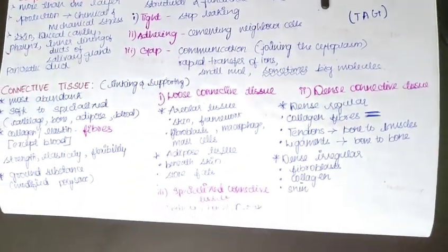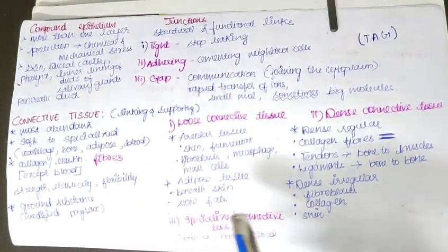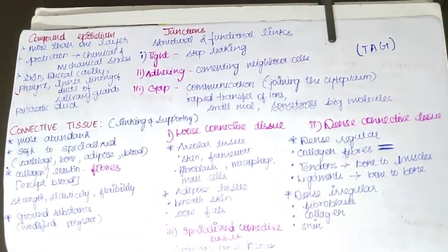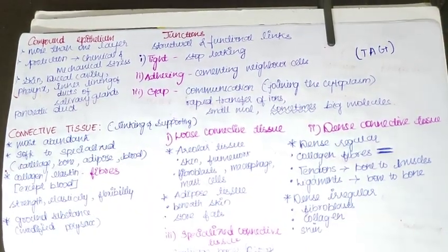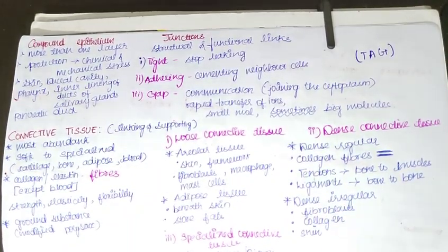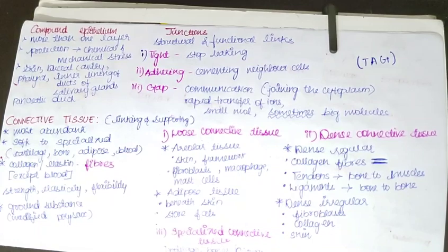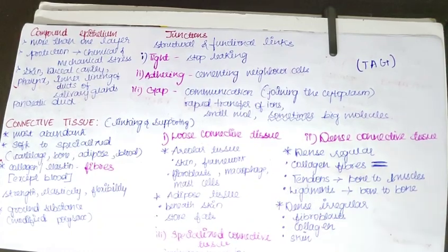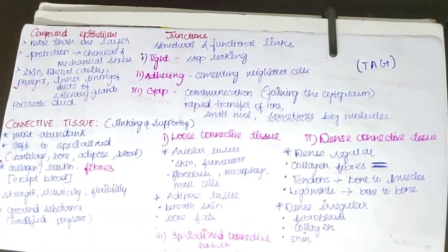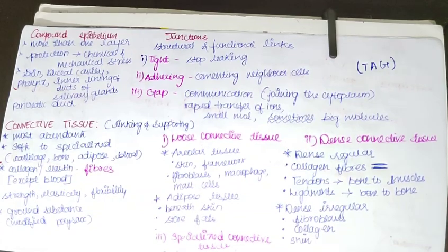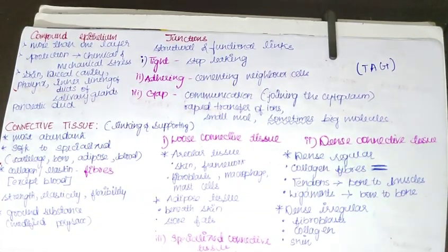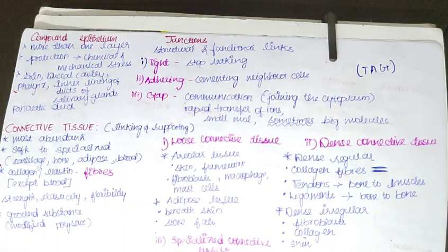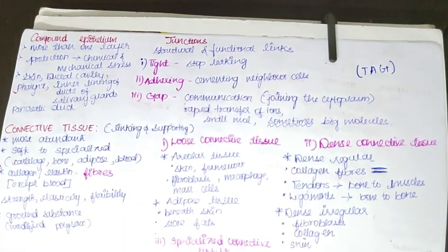Dense connective tissue has two types: dense regular and dense irregular. In dense regular connective tissue, collagen fibers are arranged in rows. This type is seen in tendons, which connect muscles to bones, and ligaments, which connect bone to bone. In dense irregular tissue, the fibers are not well arranged; it also contains fibroblasts and collagen and is present in the skin.